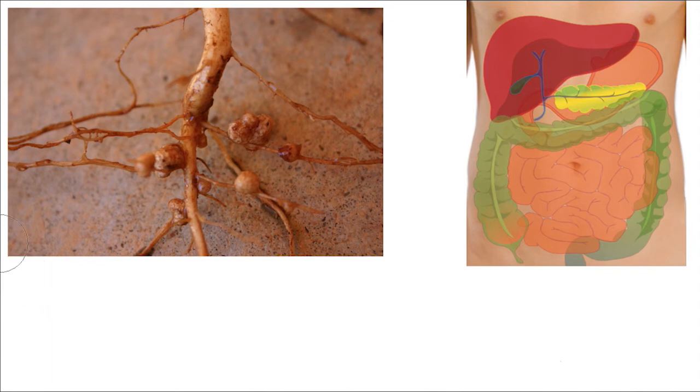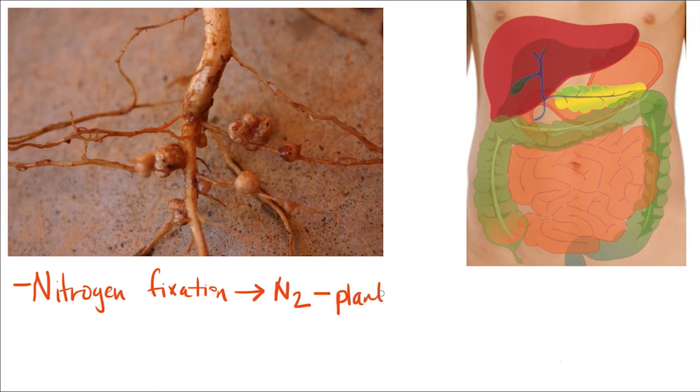I want us to talk about another way in which bacteria or prokaryotes perform a really important function, and that is in nitrogen fixation. What do I mean by nitrogen fixation? Nitrogen gas N2 is very prevalent in the atmosphere. There is no limit; we have plenty of nitrogen gas in the atmosphere. However, the problem is plants cannot make use